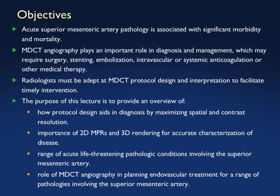CT is the ideal study for looking at the SMA and helping plan whether patients need surgery, stenting, embolization, or other therapies. A critical part of looking at the SMA is that looking at the axial images is not enough. You need to look at the sagittal views on every single case — we've spoken of that in regard to the celiac axis and to the SMA as well as the spine.